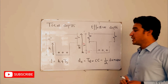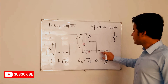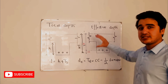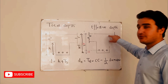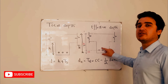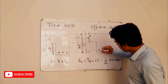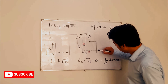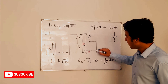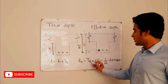So to calculate effective depth, we will need the clear cover, half of the diameter of the bar, and the total depth. As defined, it is the distance between the extreme compression fibers and the center of the main tensile reinforcement. To find the center of the main reinforcement, we take the bar diameter and divide it by two - that is how we get the center point and calculate using this formula.